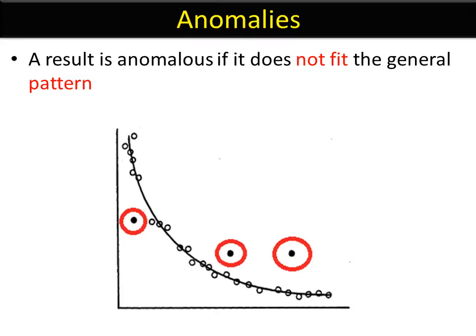An anomalous result is one that doesn't fit the pattern. It just looks a little bit out of place when you plot graphs or when you look at a table and you have a number that's really strange.